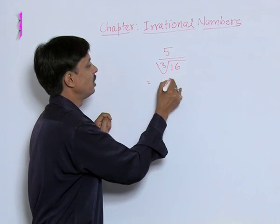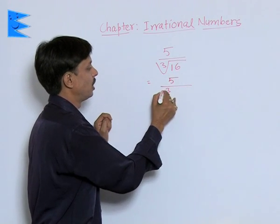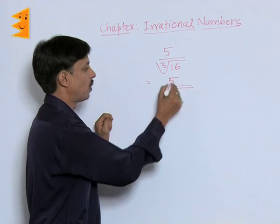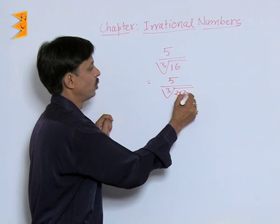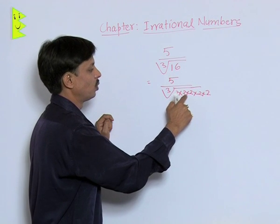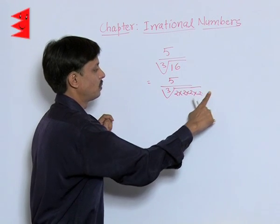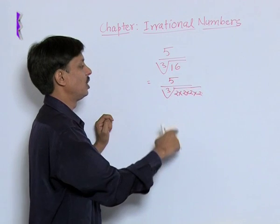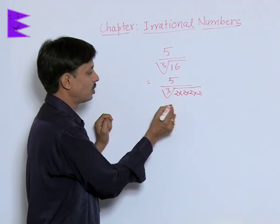First of all, I will change this cube root of 16 in its simplest form. This becomes 2 to the 4 to the 8 to the 16. Now, this order is 3.